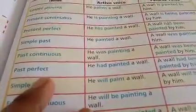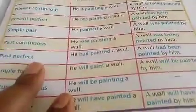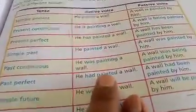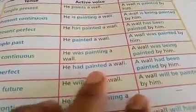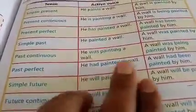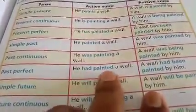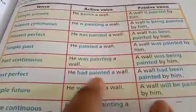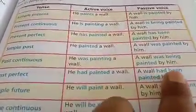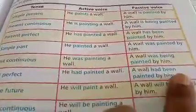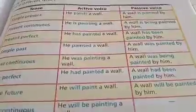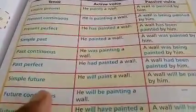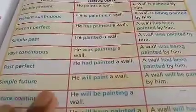For past perfect tense: 'He had painted a wall.' In past perfect, 'had' is the helping verb and a third form is used. To convert it into passive, you use the helping verb 'had been.' So 'he' converts to 'him' and the passive form is: 'A wall had been painted by him.'